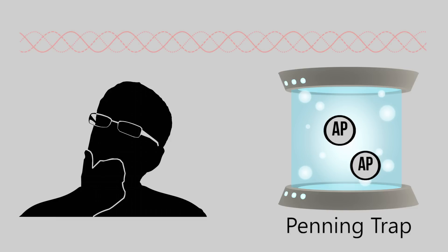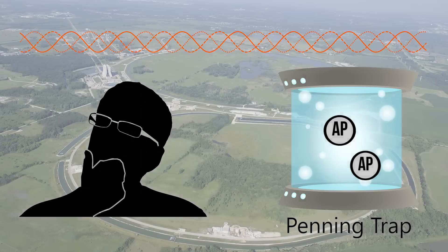So scientists came up with an ingenious solution to store them in a device called Penning traps, where they use electric and magnetic fields to keep them from colliding with matter.